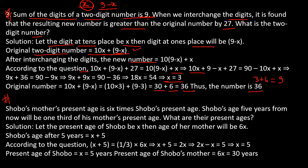Next question: Soboz's mother's present age is 6 times Soboz's present age. Soboz's age 5 years from now will be one-third of his mother's present age. What are their present ages? Suppose Soboz's present age is x, then mother's present age is 6x. According to the question: x plus 5 equals one-third of mother's present age, means x plus 5 equals one-third of 6x.